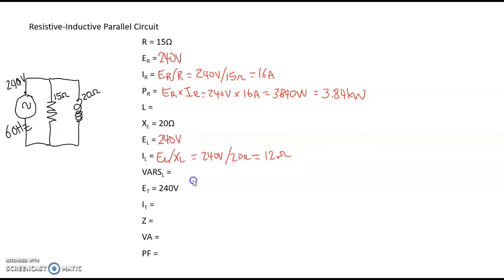If you watched my short video on true power versus reactive power versus apparent power, you know the inductor does not dissipate any true power, because the current and voltage are out of phase with each other. But the inductor still has voltage across it and current through it, so that's reactive power — a sort of phantom power measured in volt-amps reactive.